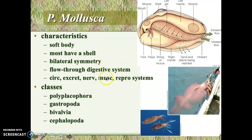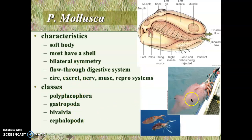The next phylum is the mollusks — this is the first phylum where you see people consuming and eating these organisms. We're going to look at several classes of mollusks. Mollusks include squids and clams and are much more complicated organisms. They have circulatory, excretory, and nervous systems, some fairly complicated muscle systems that we like to eat, and reproductive systems.